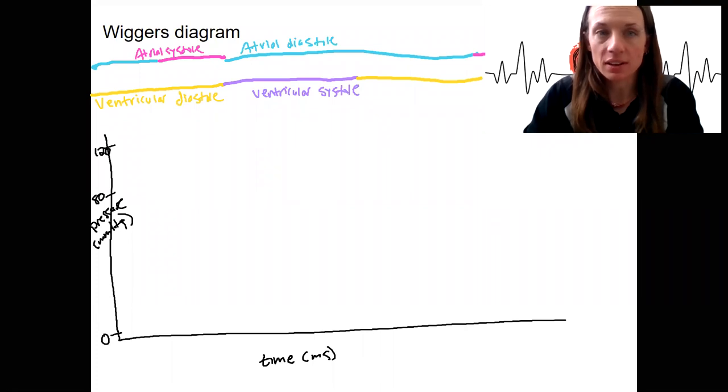So the Wiggers diagram is a graph of the cardiac cycle. The pressure changes over time, and it's meant to be helpful to understand how changes in pressure correspond to each of the events, but it does require looking closely at it. It's kind of like the estrus cycle events. There's a lot shown there. So I'm going to draw it, and then we're going to look at another picture of it as well.